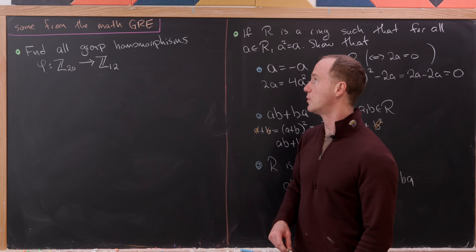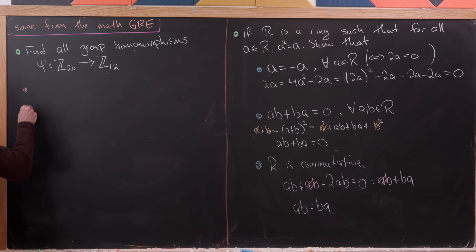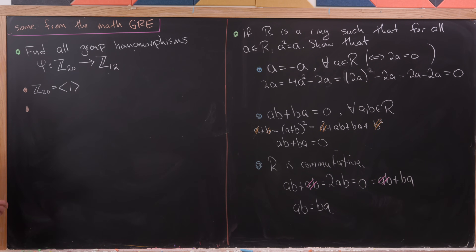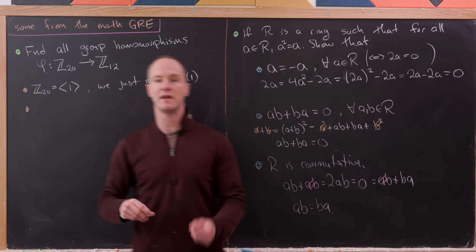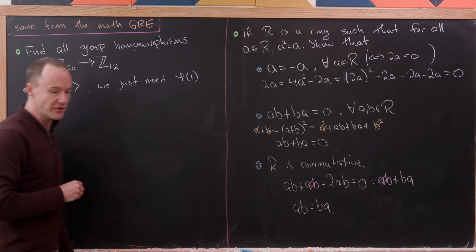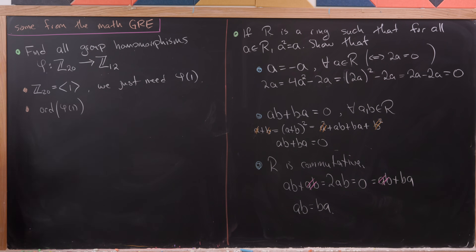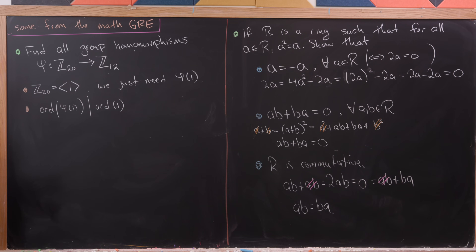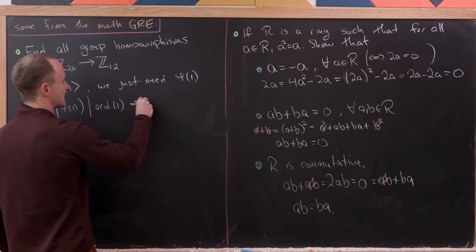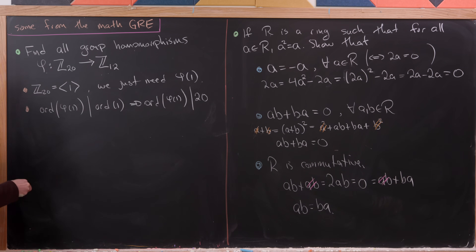The last problem is to find all group homomorphisms from Z₂₀ to Z₁₂. Since Z₂₀ is a cyclic group generated by 1, we just need to find where φ sends 1 and then we know what it does to everything. A key result is that the order of φ(1) inside Z₁₂ must divide the order of 1 inside Z₂₀, which is 20.